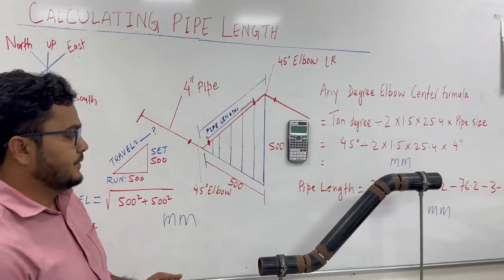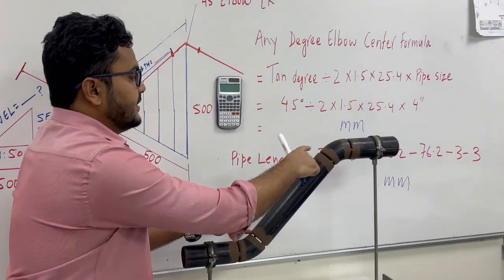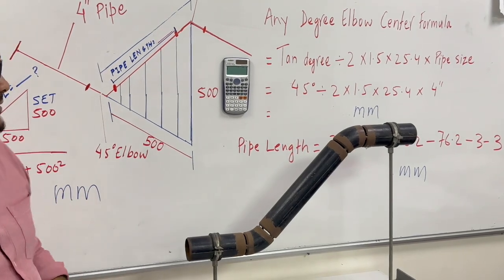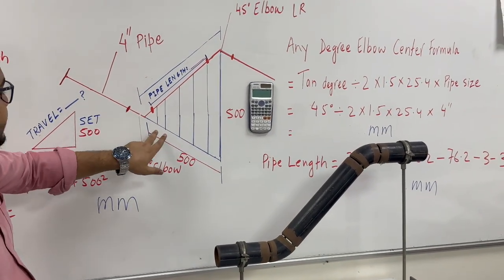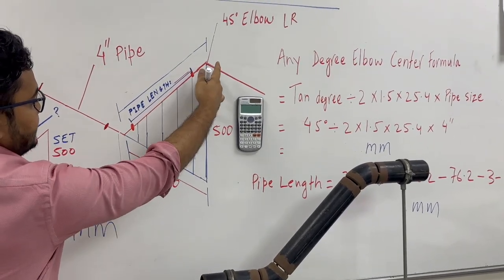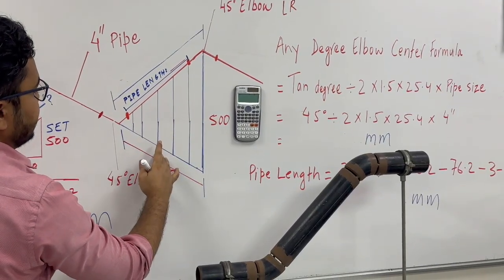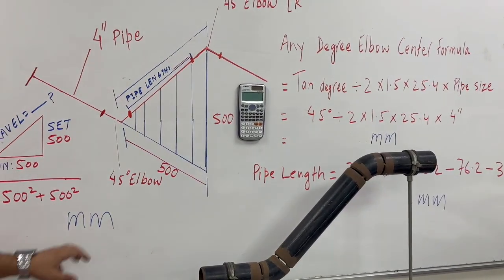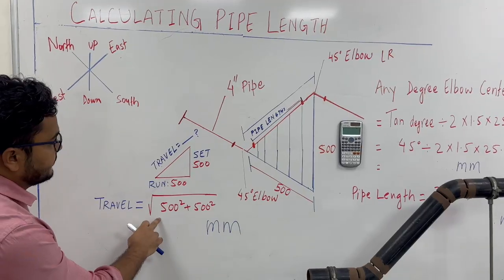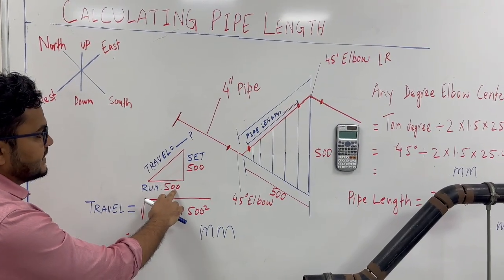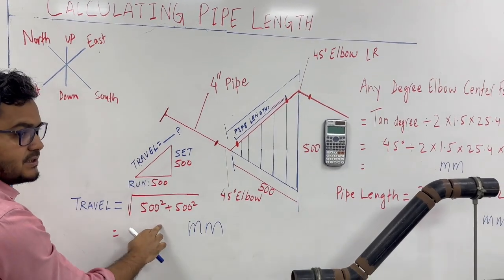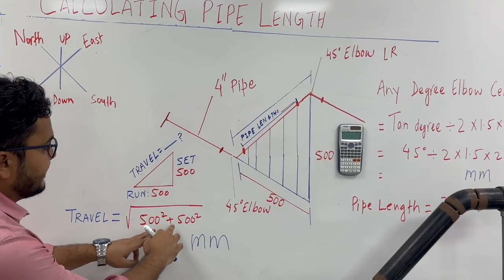We need to calculate this pipeline from here to here. Step by step I will make you understand. We have drawn here a triangle — you can see this is the set, this is called run, and this is travel. We have the formula: travel equals the square root of run squared plus set squared.